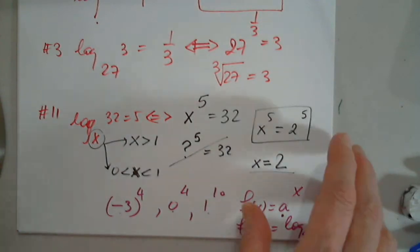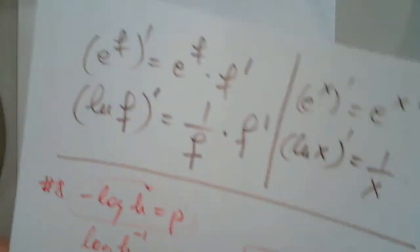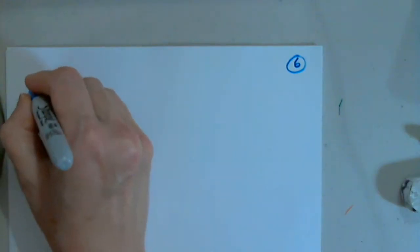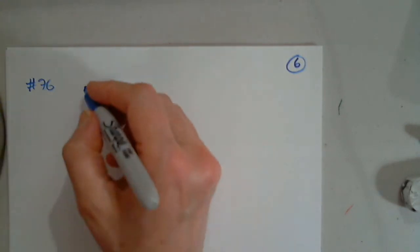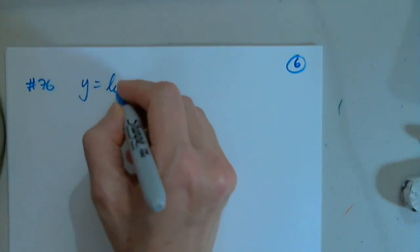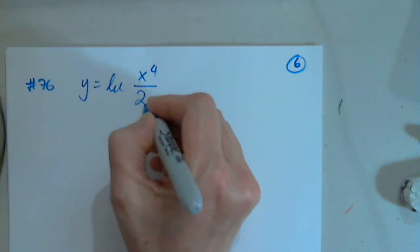Good. Okay. Anything else we want to before we look at differentiation and applications? 76. Let's see. Where is it? Very good. Okay. Here it is. So we have y equals natural log applied to x to the fourth divided by 2.